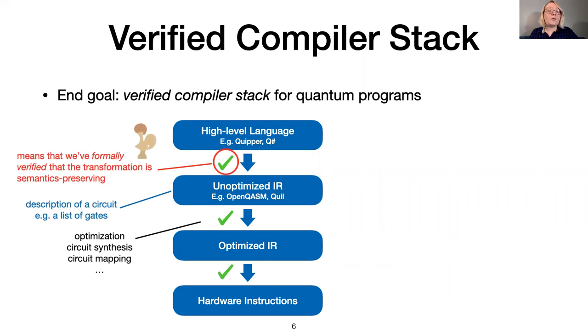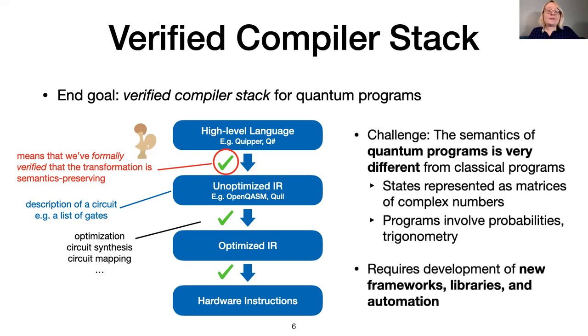So far, we have focused on the intermediate level of the software stack, where the most interesting optimizations and transformations occur. We work with an intermediate representation that describes a quantum program as a list of gates, as is standard. Verified compiler stacks for classical programs have seen recent success, which gives us hope that this is possible in the quantum setting, too. However, existing tools for verifying transformations of classical programs do not directly apply to the quantum setting, due to the fundamentally different semantics of quantum programs.